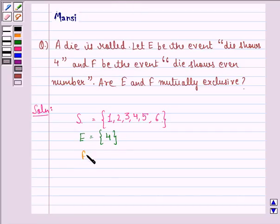Also F will be the event when the die shows even number. So F is the event of getting 2, 4 or 6.